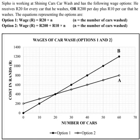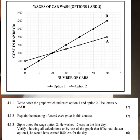At the break-even point, both options give the same amount because the graphs are equal there. We are also shown that the darker line is option 1 and the lighter line is option 2. The first question, 4.1.1, asks us to write down which graph indicates option 1 and option 2, using letters A and B.